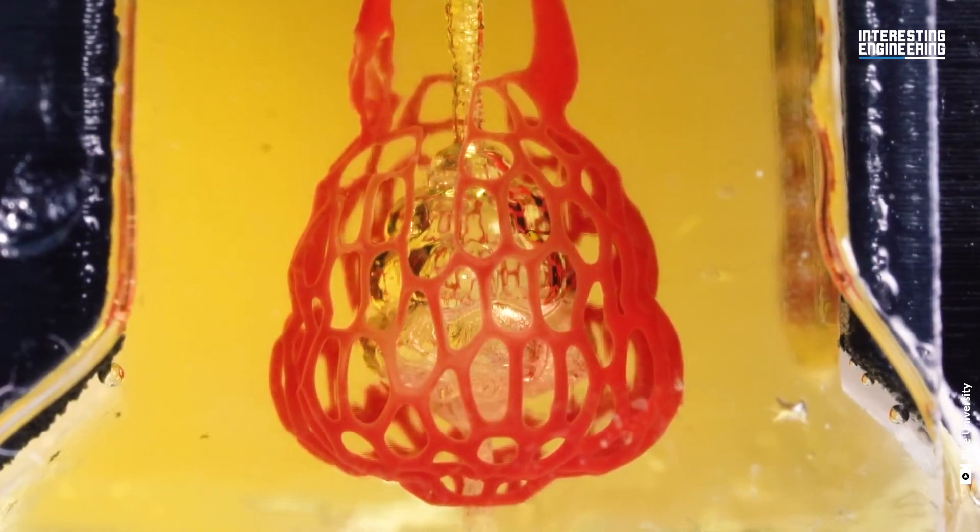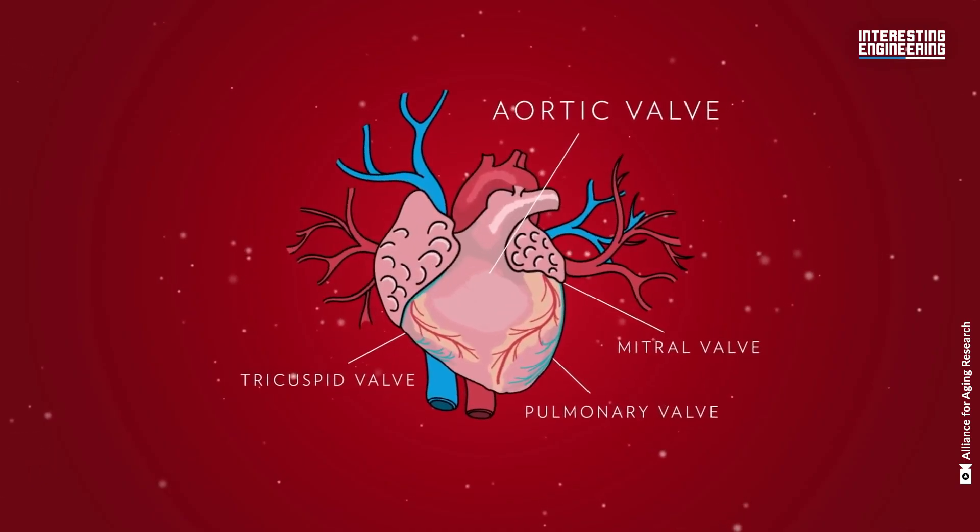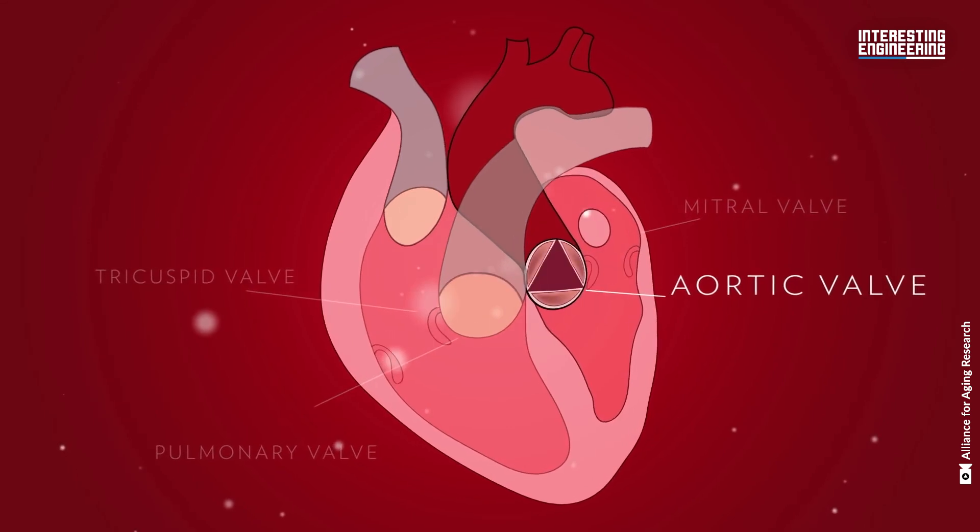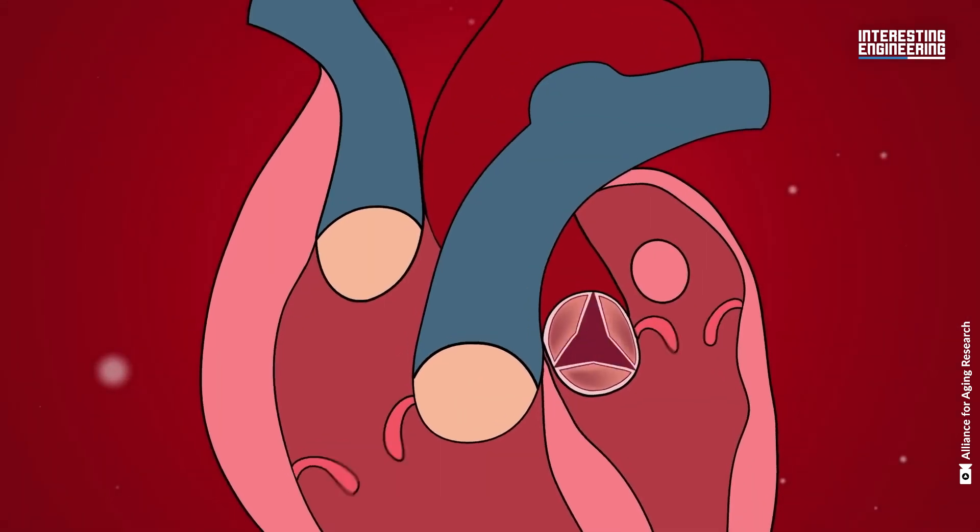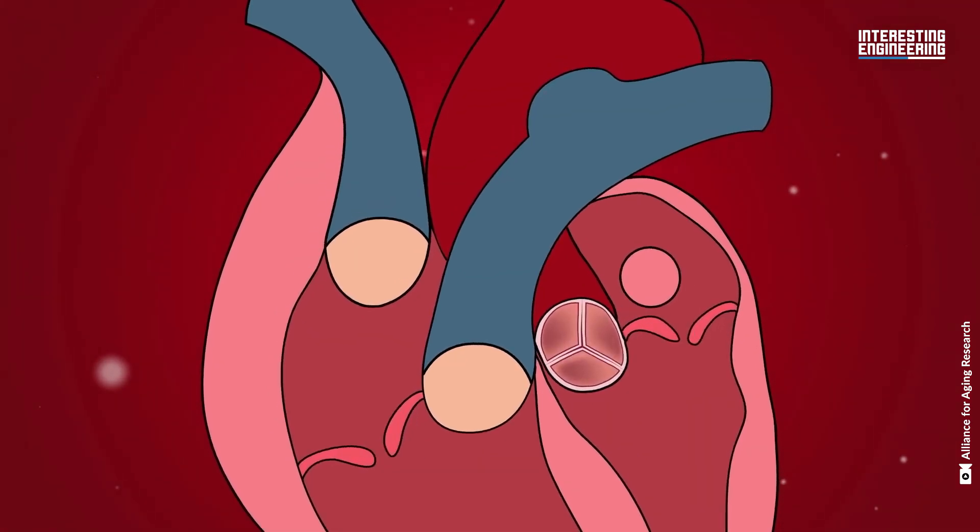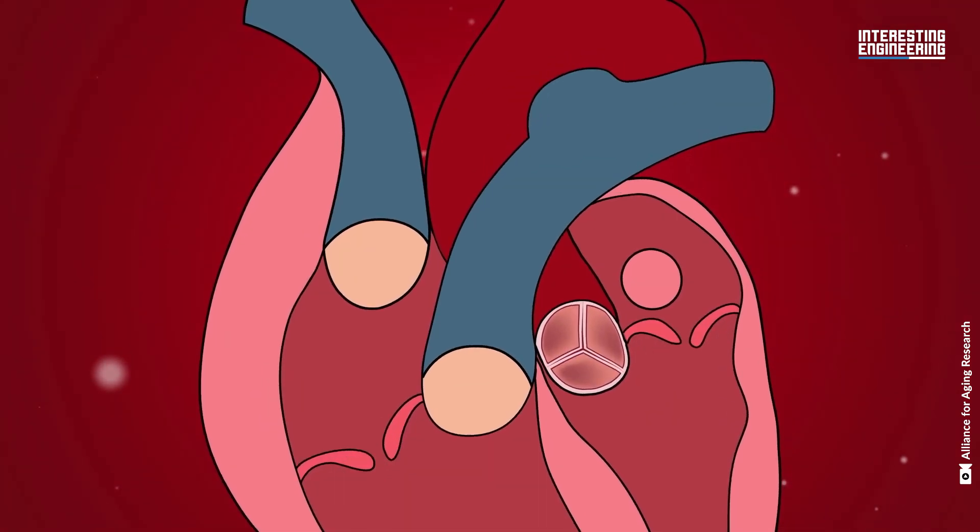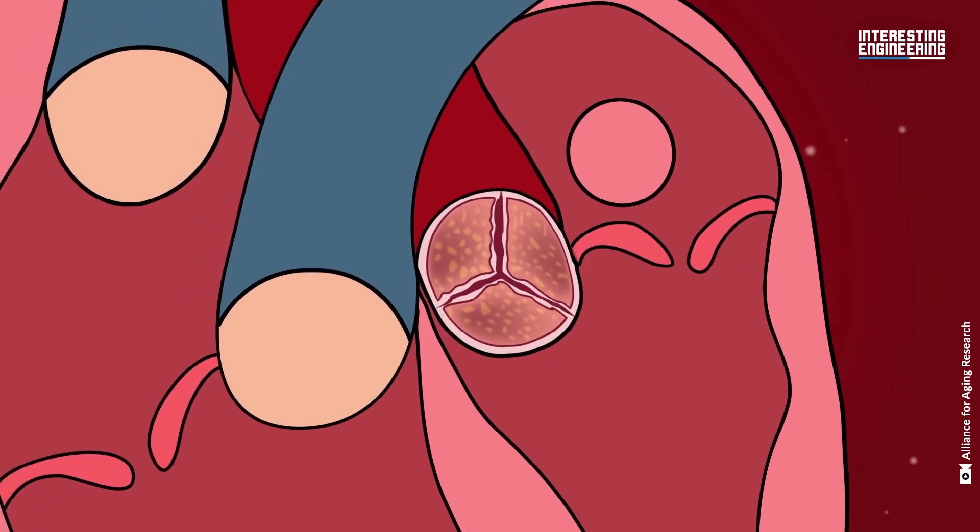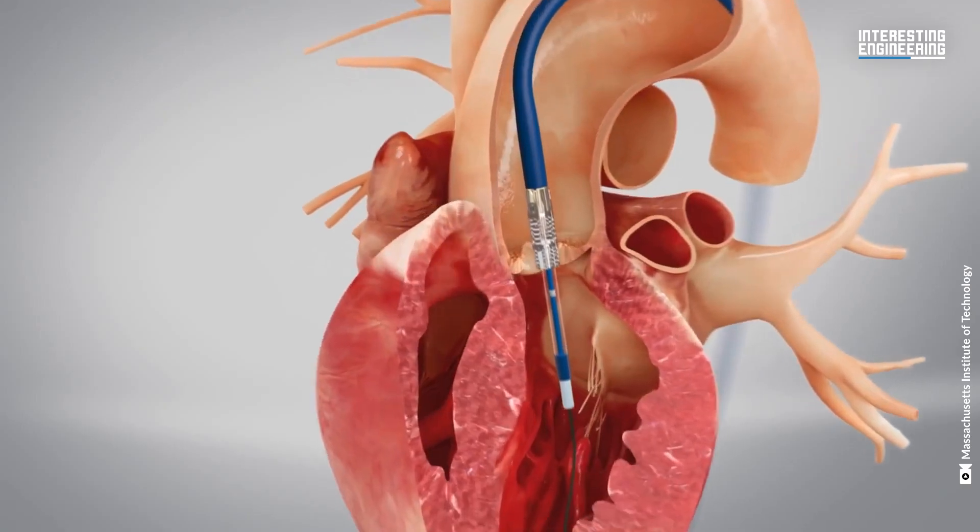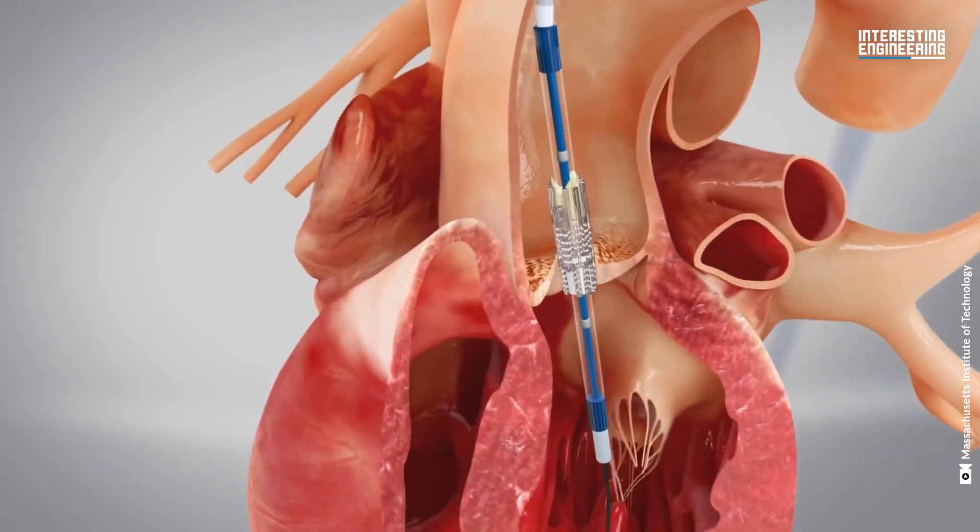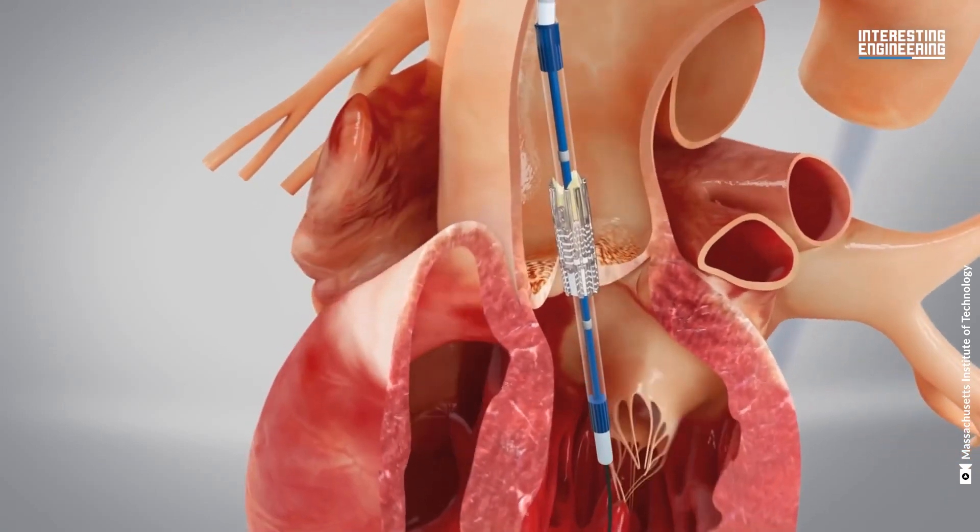One of the potential applications of these 3D printed hearts is in the treatment of aortic stenosis. This condition, affecting 1.5 million people in the U.S., involves the narrowing of the aortic valve, compelling the heart to exert more effort in pumping blood. Traditionally, a synthetic valve is surgically implanted to treat aortic stenosis.